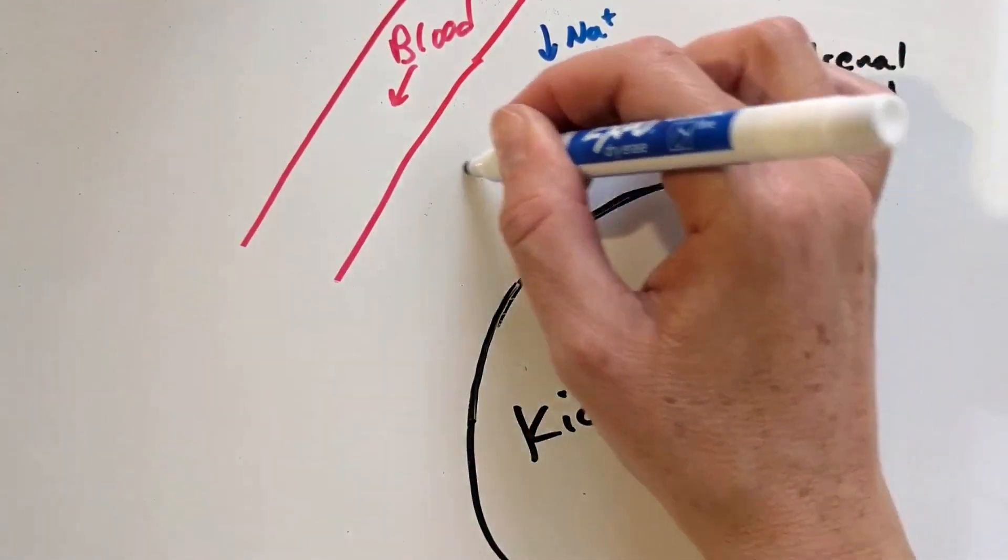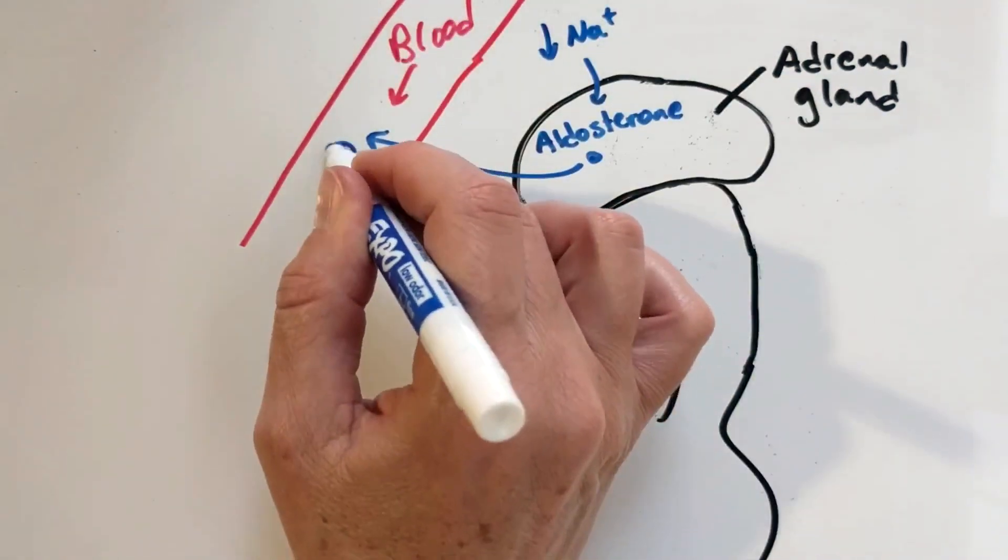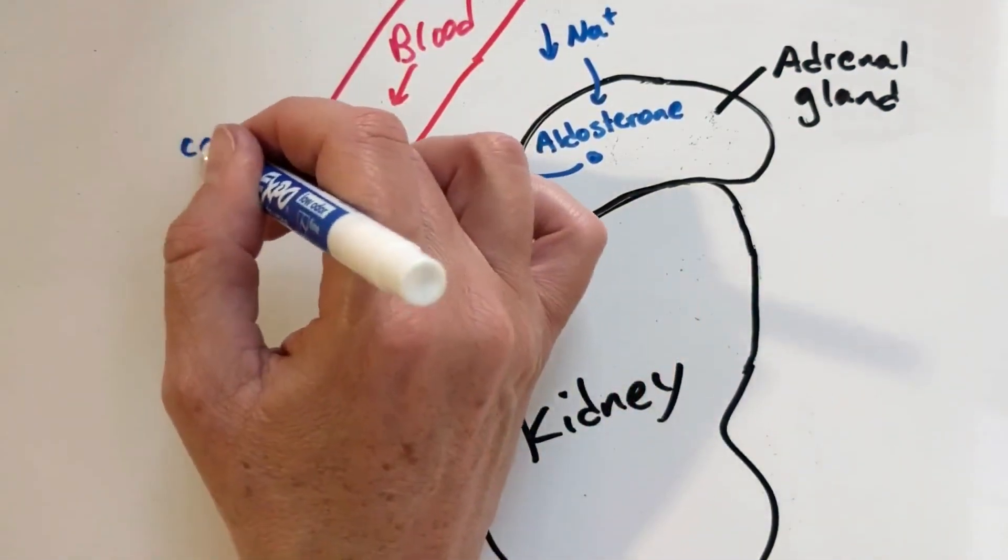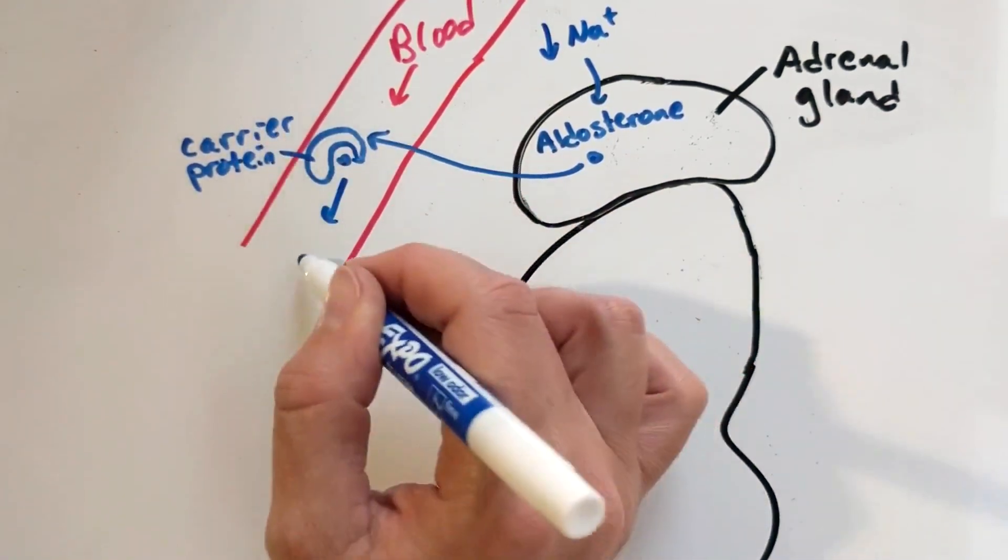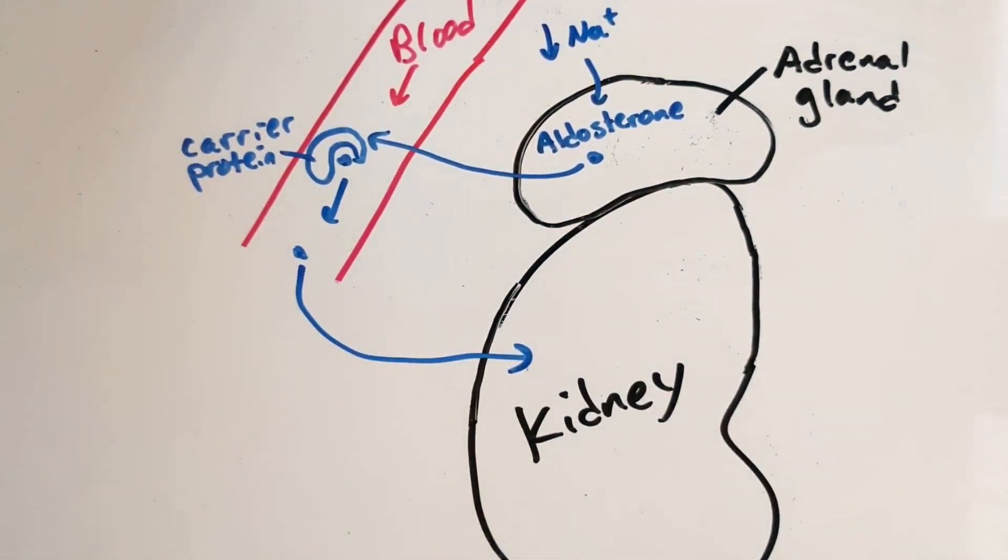Aldosterone is a steroid hormone, so once it is made, it can simply diffuse out of the endocrine cell and travel into the blood. Once in the blood, it binds to a carrier protein that helps it travel to its target cells in the kidney.